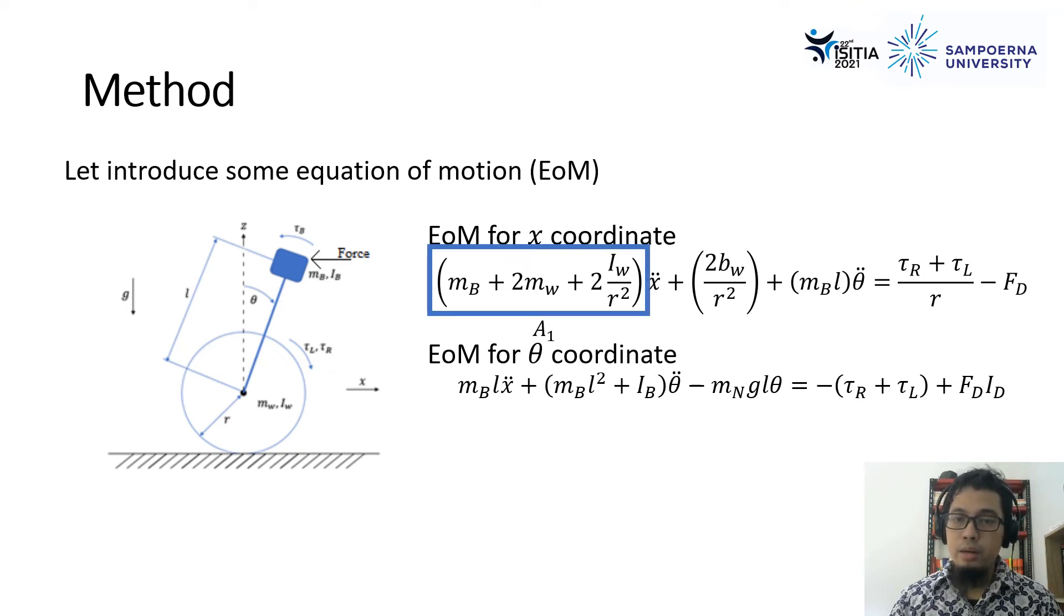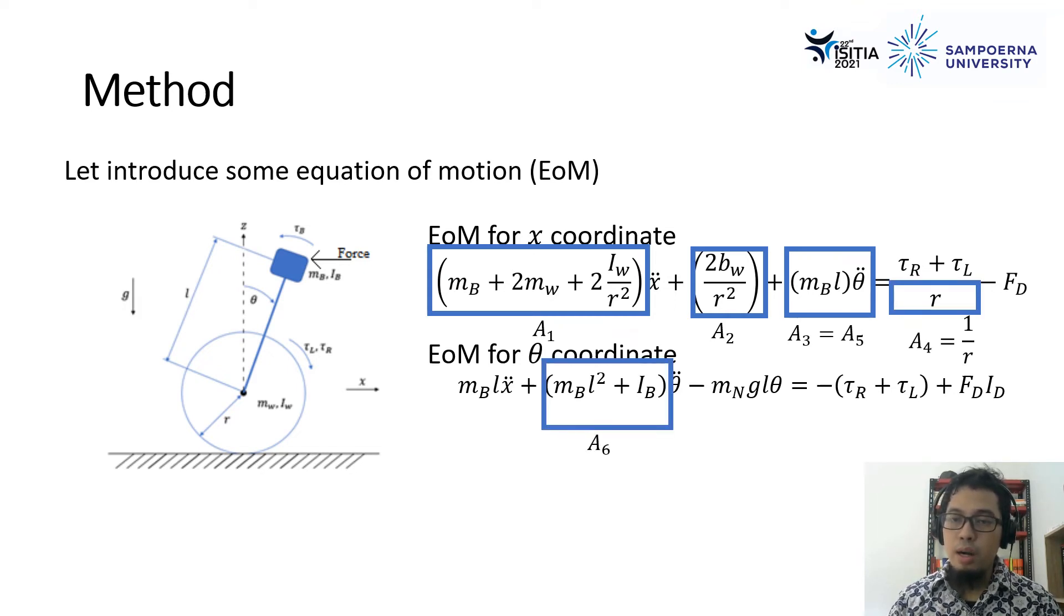Here, we state like in x-coordinate, in the blue rectangle, it is A1, A2, A3, and A5. And then for A4, it is 1 over R, A6, A7, and A8. This categorization is to simplify the equation that we have.